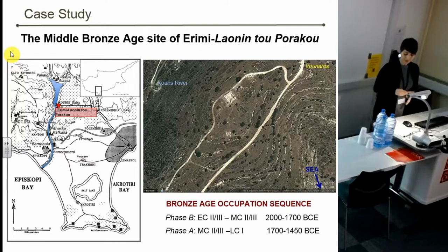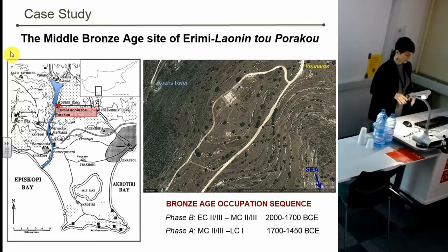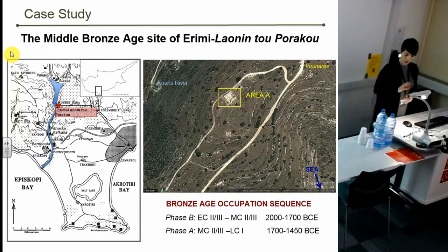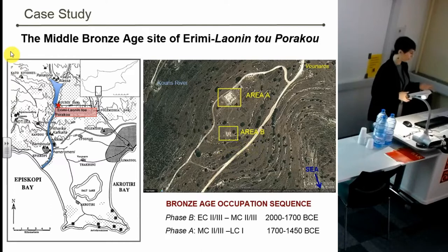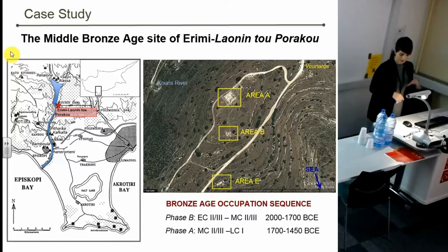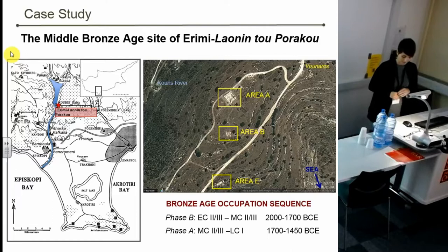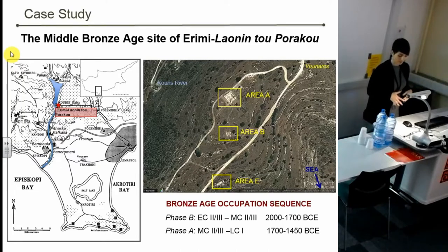The settlement appears to have occupied two main areas of different functions located on sloping limestone terraces. A productive area, Area A, is located on the top of the hill, while the first lower terrace is occupied by a residential area, Area B. A cluster of tombs, Area E, extending south of the productive and residential areas, is contemporary with the settlement. The built space is characterized by an organized layout of rock-cut spaces, and both areas A and B show an alternation of roofed spaces and open ones.